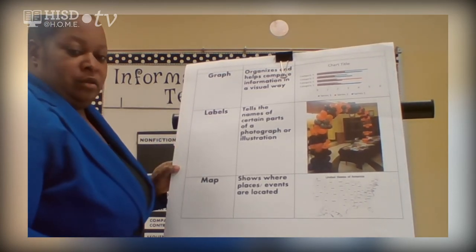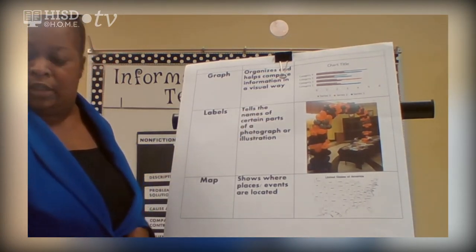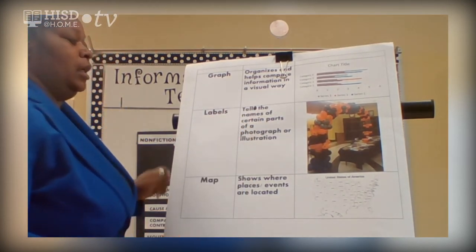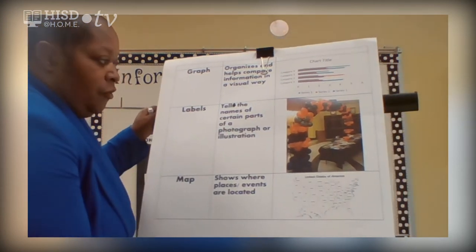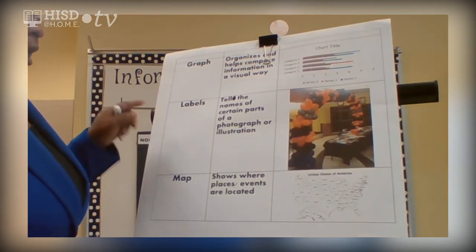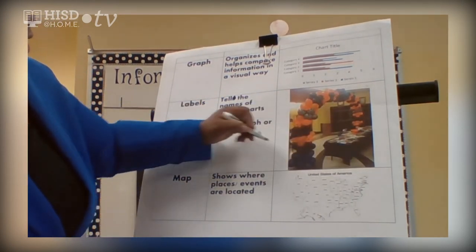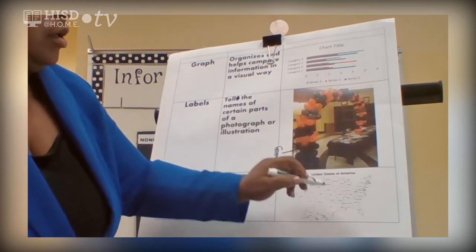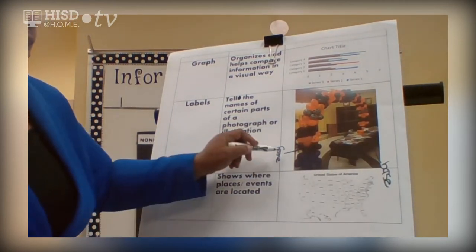A graph organizes and helps compare information in a visual way. Labels tell the names of certain parts of a photograph or illustration. For example, I can label parts of this balloon arch — an arrow pointing to the frame, and under the table is the face. These are labels.